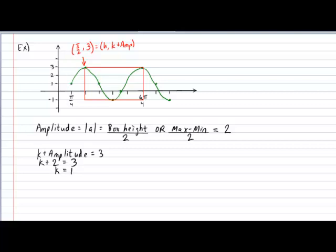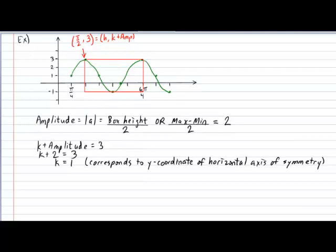One very important observation that we can make is that the value of k also corresponds to the y coordinate of the horizontal axis of symmetry of our wave. In the next step, we can finally determine the value of b through the period. The period corresponds to the formula 2π divided by the absolute value of b. And if you count up the length of your box very carefully, you'll find that in this example, our period is equal to π radians long. That leads to an absolute value of b equal to 2.